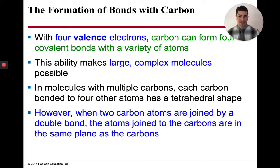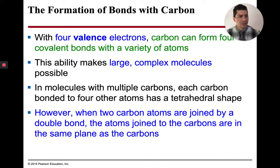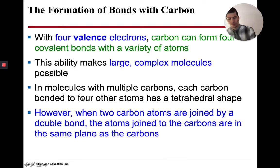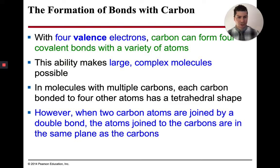Since we can attach four different atoms to carbon, those atoms can then go to other atoms and branch out. With carbon, we have single bonds, double bonds, and triple bonds. If there's a carbon double bonded to another carbon or something else, that carbon is going to be in a straight line — so that molecule will form a straight line pattern.